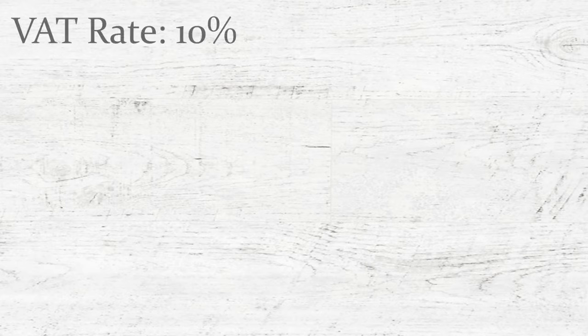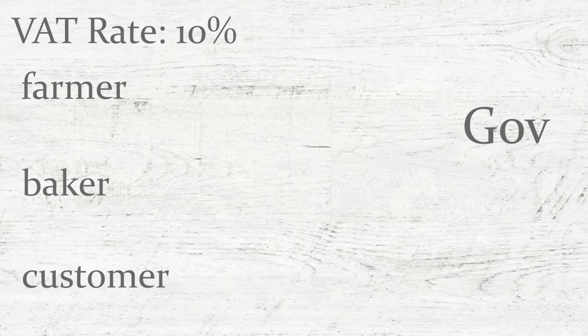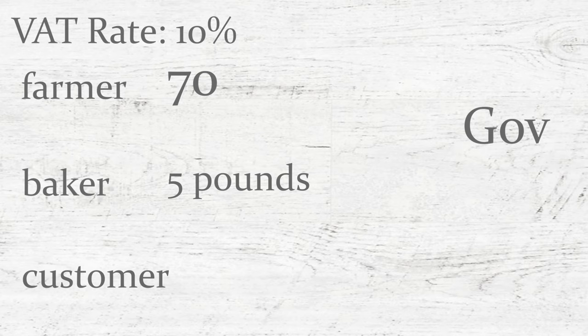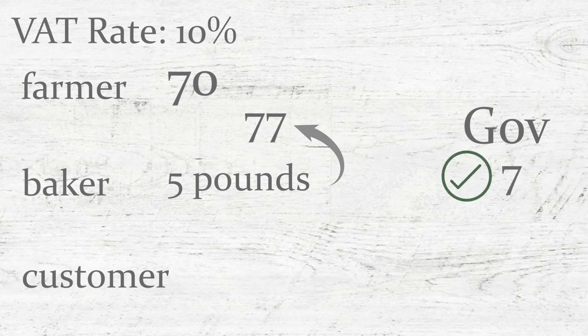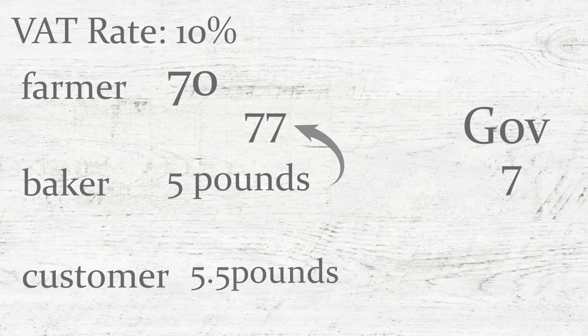Let's use an example to make the concept easier to understand. If the VAT rate is 10%, a farmer sells one bag of apples to a baker for 70 pence, and the baker made a jar of apple jam and sells it to the customer for 5 pounds. During this process, the baker paid 77 pence to the farmer, of which 7 pence is the VAT fee paid to the government by the farmer. When this apple jam got on the shelf, the customer needs to pay 5.50 pounds for it, as 50 pence is the VAT fee, and the baker will pay 50 minus 7, which is 43 pence, to the government.